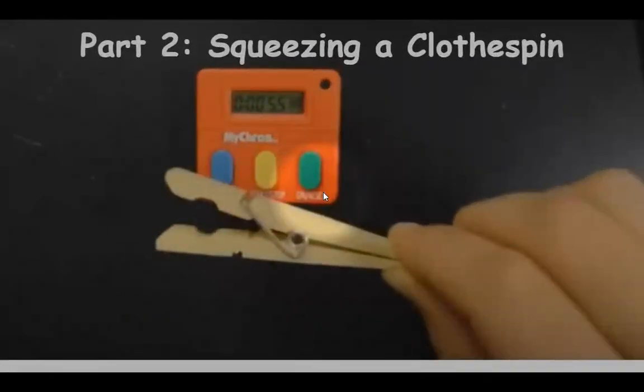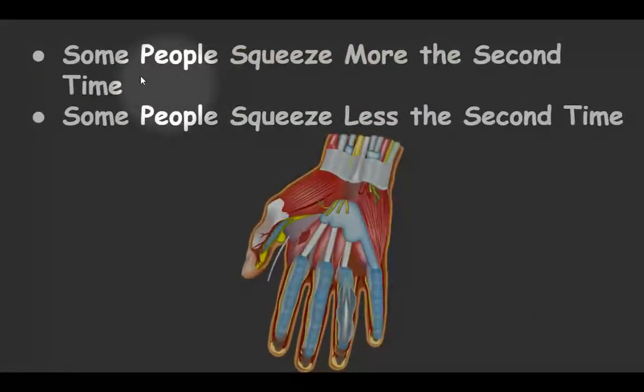Okay, part two of the lab is the squeezing the clothespin lab. It asks you to squeeze the clothespin as many times as you can in one minute, and then you take a little rest and then you do it again. Now the thing is that some people actually are able to squeeze the clothespin more time the second time, whilst other people are able to squeeze it less time, and there's two explanations. The thing with this lab is that there's no right or wrong answer, it's just how you explain it.